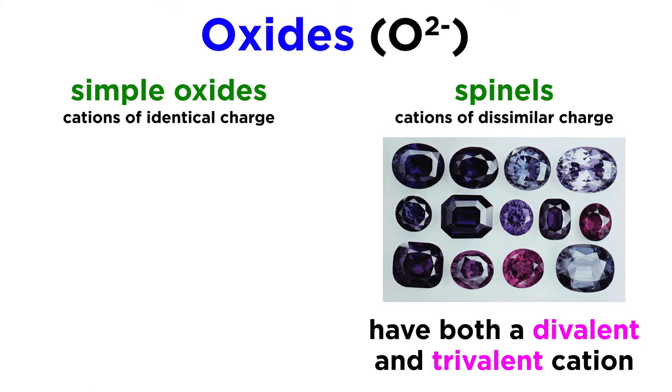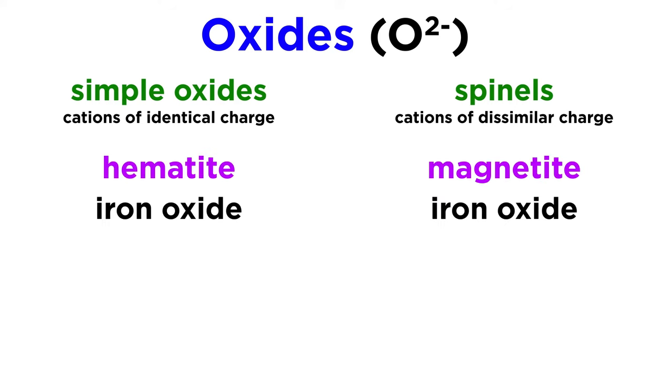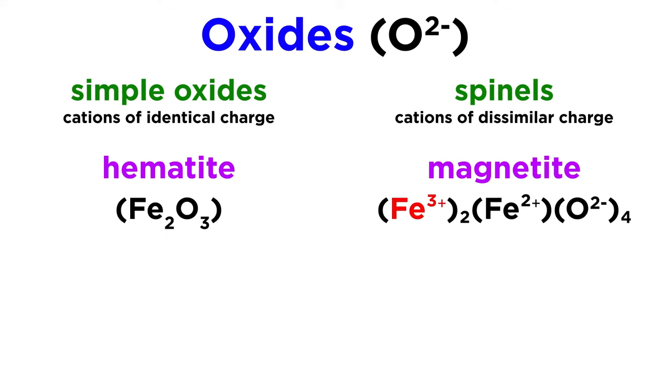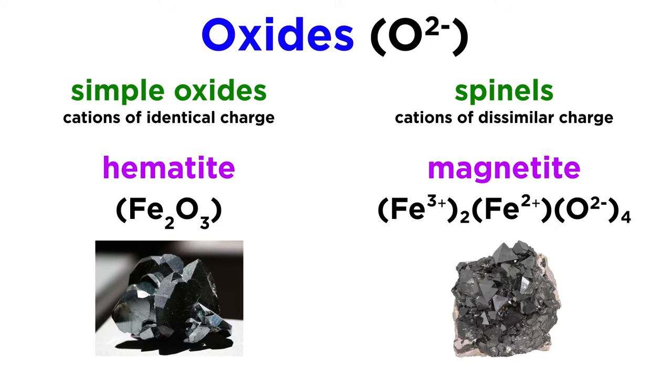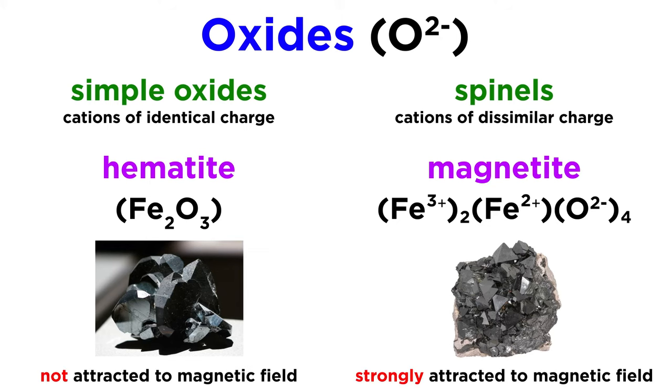The spinels are a bit more complicated, having both a divalent and trivalent cation in their chemical formula. Magnetite is an iron oxide like hematite, but it contains both ferric and ferrous iron, having a chemical formula of Fe3+2, Fe2+, O2-4. The difference between magnetite and hematite is clearly highlighted by their magnetic properties, as magnetite is strongly attracted to a magnetic field, whereas hematite is not.